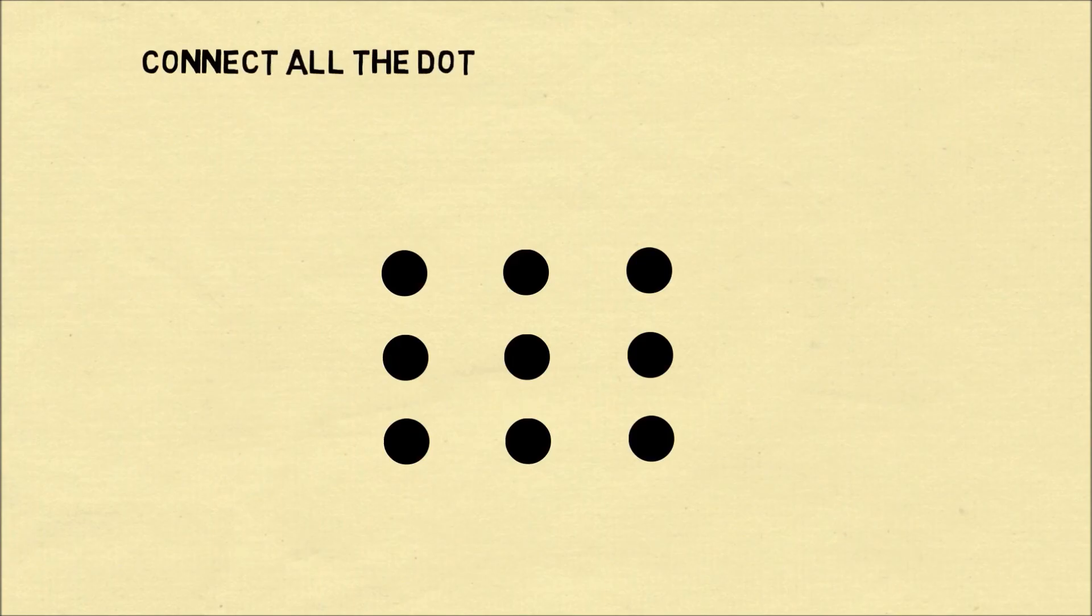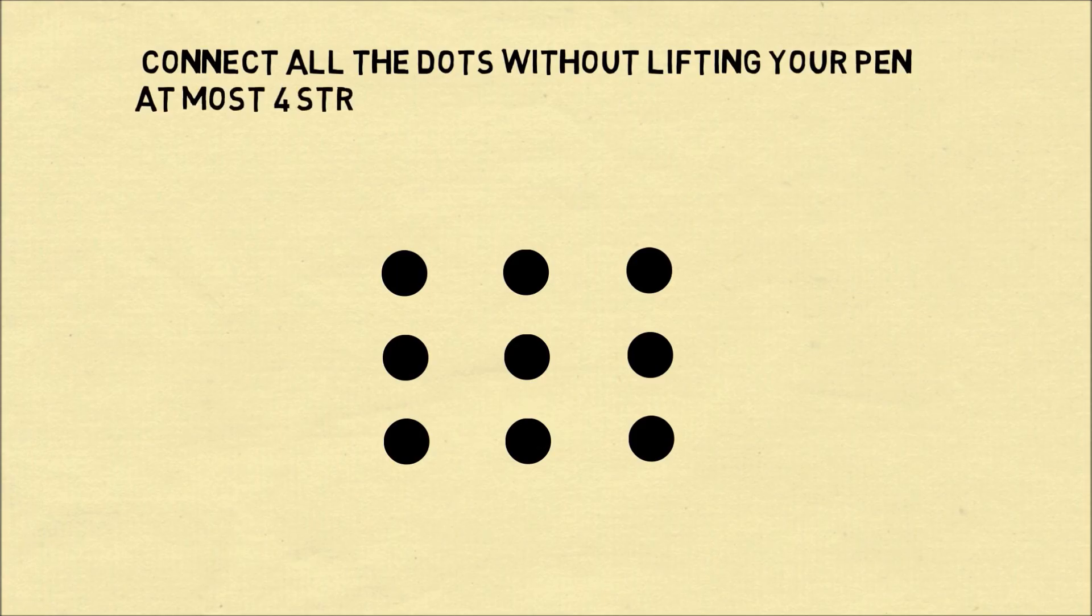In the first puzzle, you have nine different dots that you need to connect without lifting your pen, and you have to do it with at most four straight lines, and you can't retrace any of the lines.